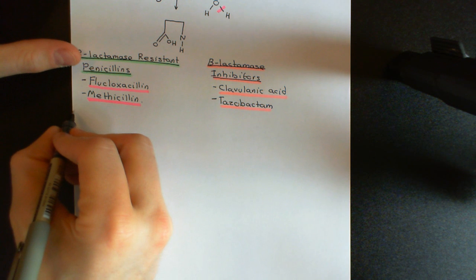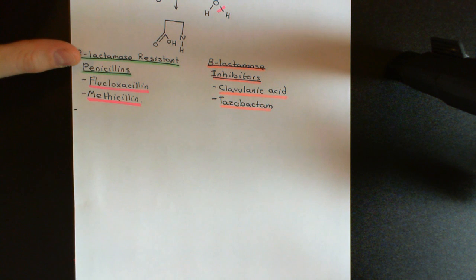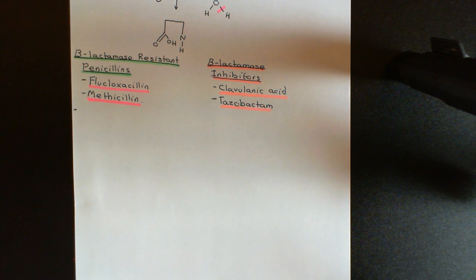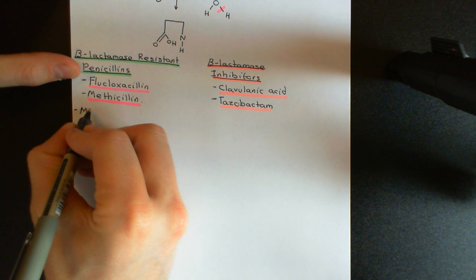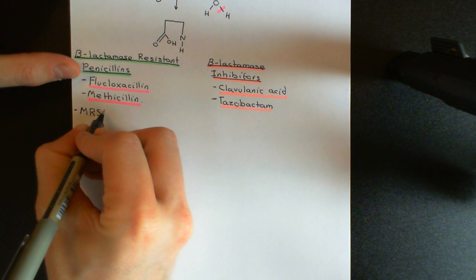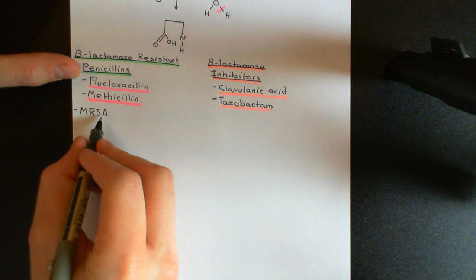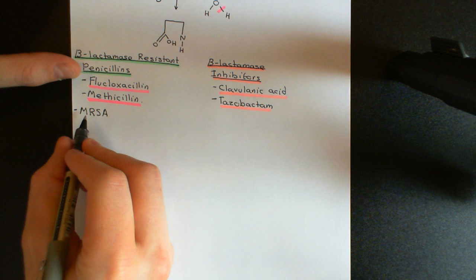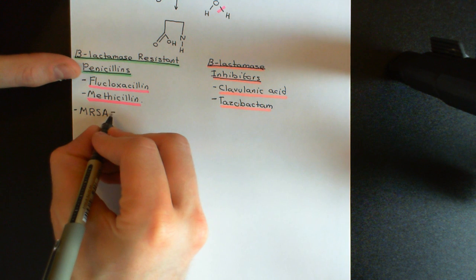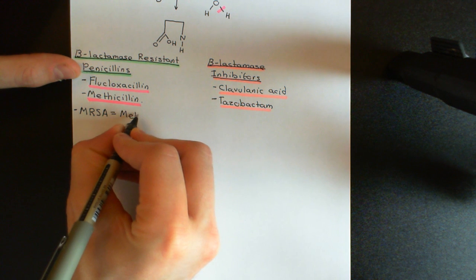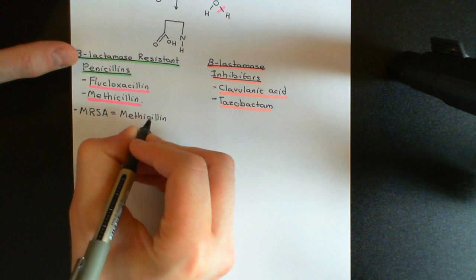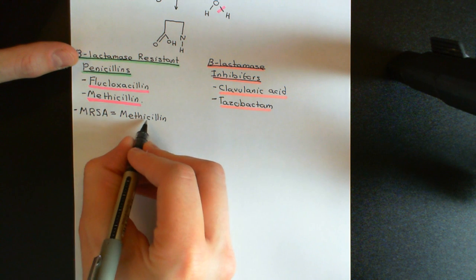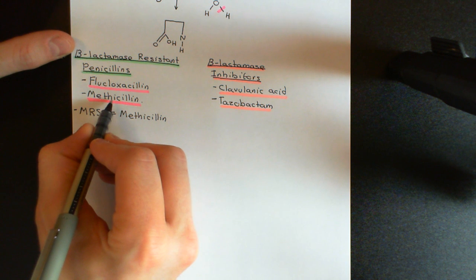One of the major strains that has emerged with this property is MRSA. MRSA is a strain of Staphylococcus aureus that has this modified peptidoglycan transpeptidase, which is resistant to all penicillin antibiotics. MRSA stands for Methicillin-resistant Staphylococcus aureus. Methicillin is an example of a beta-lactamase resistant penicillin.